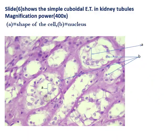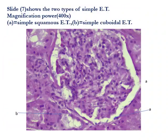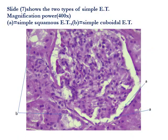This slide shows the simple cuboidal epithelial tissue in the kidney tubules, where A refers to the shape of the cell while B refers to the nucleus of the cuboidal cell. This slide also shows the two types of simple epithelial tissue in the kidney: A refers to the simple squamous epithelial tissue in Bowman's capsule, while B refers to the simple cuboidal epithelial tissue in the kidney tubules.